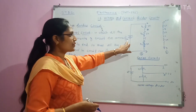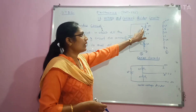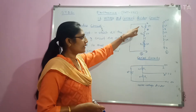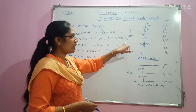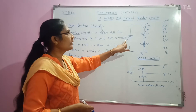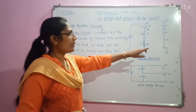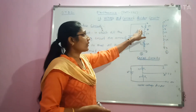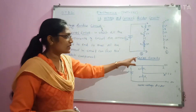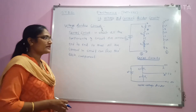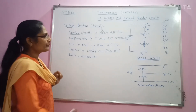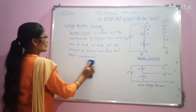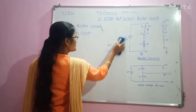In this series circuit, we have used a battery across a series combination of three resistances R1, R2 and R3. All three resistors are connected end to end and a battery supply is attached across them. Such a circuit is called a series circuit. Now we will see the properties of the series circuit.